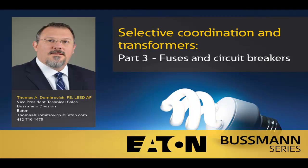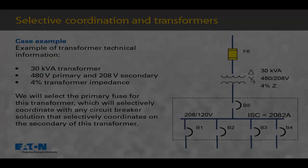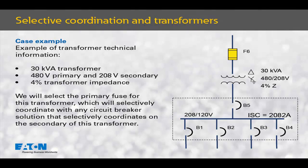Hello, my name is Thomas Dmitrovich. During this session, we'll speak to leveraging fuses and circuit breakers when selectively coordinating around a transformer. The example we'll use is a 30 kVA transformer with a 480 volt line-to-line primary voltage and a 208 volt line-to-line secondary voltage. We are only going to select the primary fuse for this application. This solution will work with any downstream circuit breaker panel solution that selectively coordinates to the maximum available short circuit current on the secondary of this transformer.